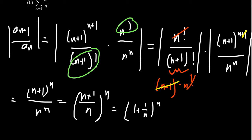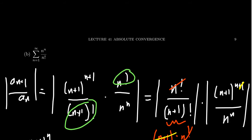This limit is a bit more tricky: if we just set n → ∞, we get 1^∞, which is an indeterminate form. This leads to an L'Hôpital-type argument — you can see the linked video for details — but this limit turns out to be the number e, approximately 2.7. Since e > 1, the ratio test tells us this series is divergent.